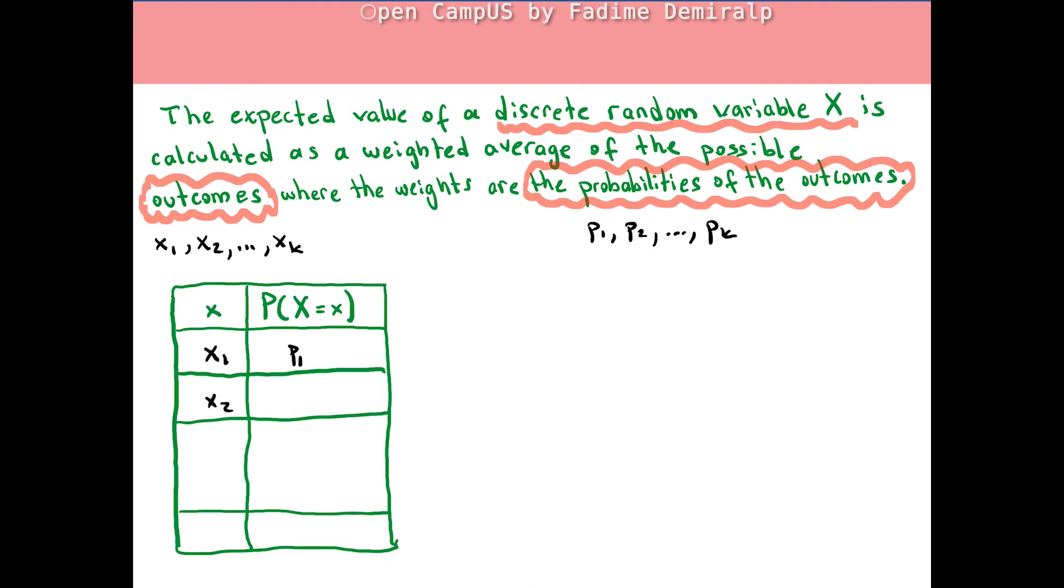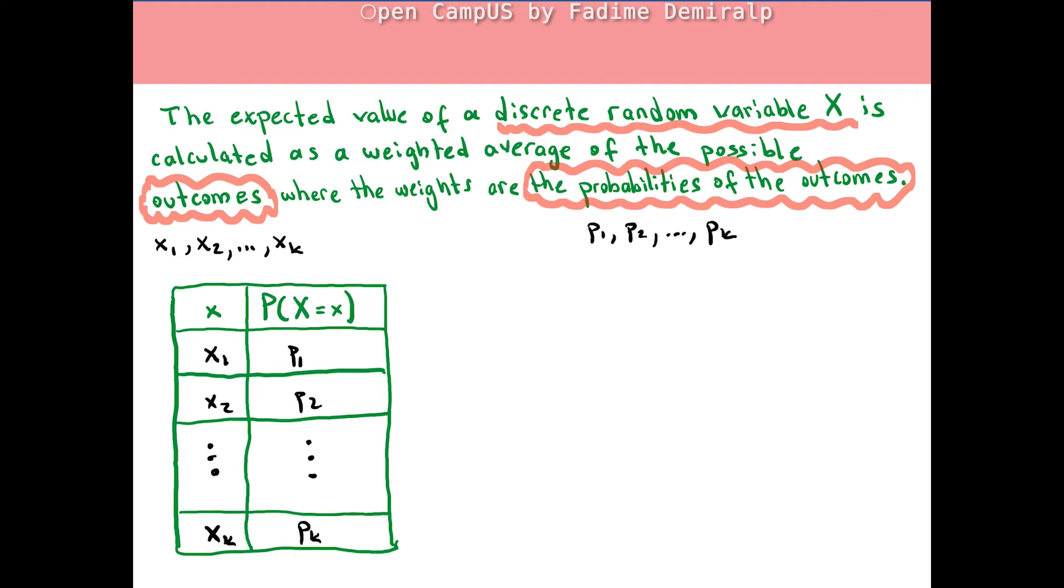X₂ as an outcome has probability p₂. Last outcome xₖ has probability pₖ. Then the expected value or mean value of the discrete random variable X is the sum of all products of outcomes and corresponding probabilities.